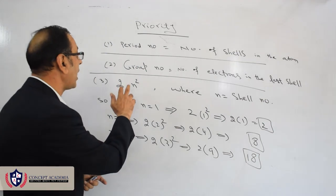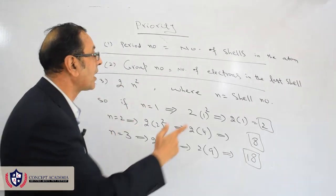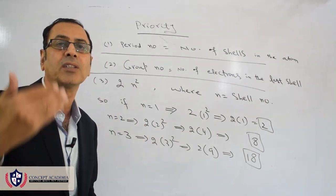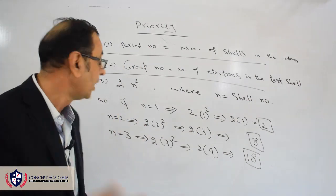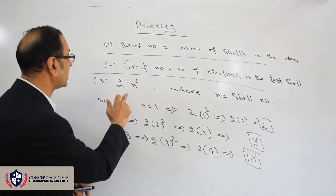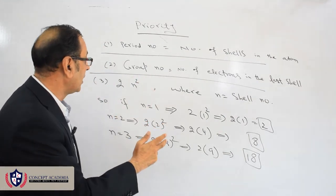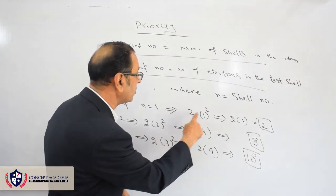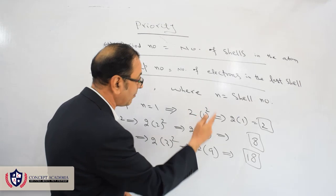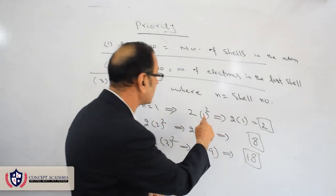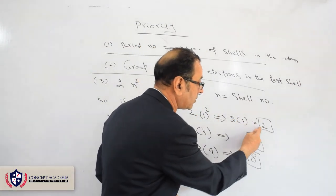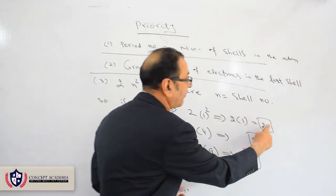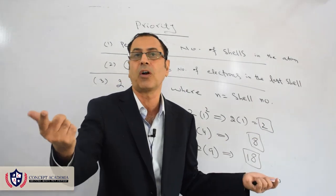The rule is 2n², where n is the shell number. For shell number one, n = 1, so 2n² = 2 × 1² = 2 × 1 = 2. It means the first shell can maximum have two electrons. For shell number two, n = 2, so 2n² = 2 × 2² = 2 × 4 = 8. So the second shell can maximum have eight electrons.